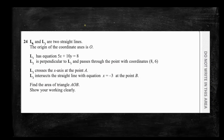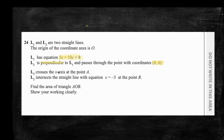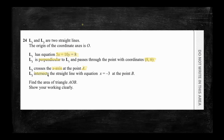In this question we are given two straight lines L1 and L2. The equation of L1 is 5x plus 10y equals 8. Line L2 is perpendicular to L1 and passes through a given point. L2 also crosses the x-axis at some point A and intersects a straight line with equation x equals negative 3 at point B. We are trying to find the area of triangle AOB. Let's break this problem into small pieces.